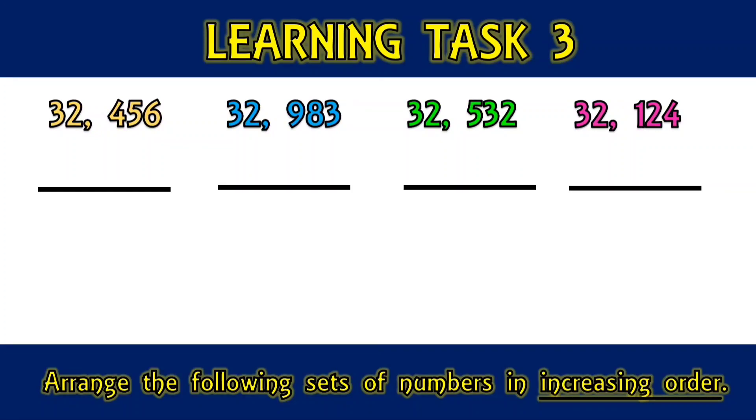Arrange the following set of numbers in increasing order: 32,456, 32,983, 32,532, and 32,124. Increasing means to become progressively greater.